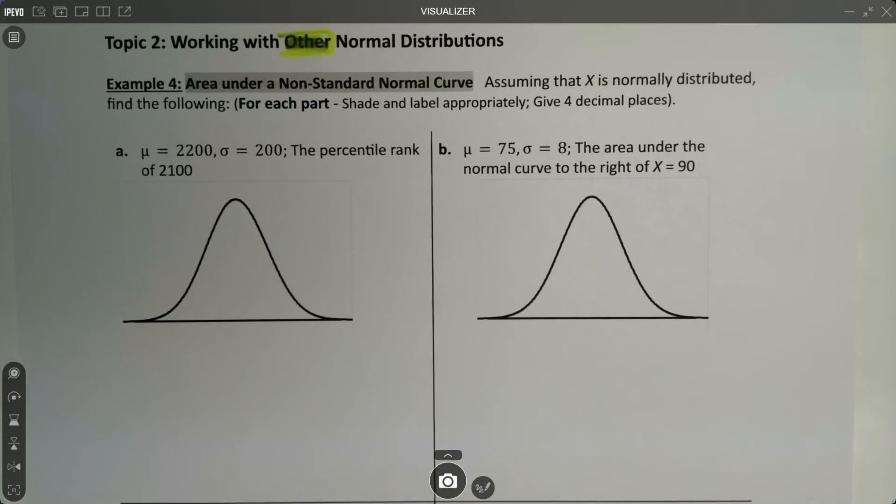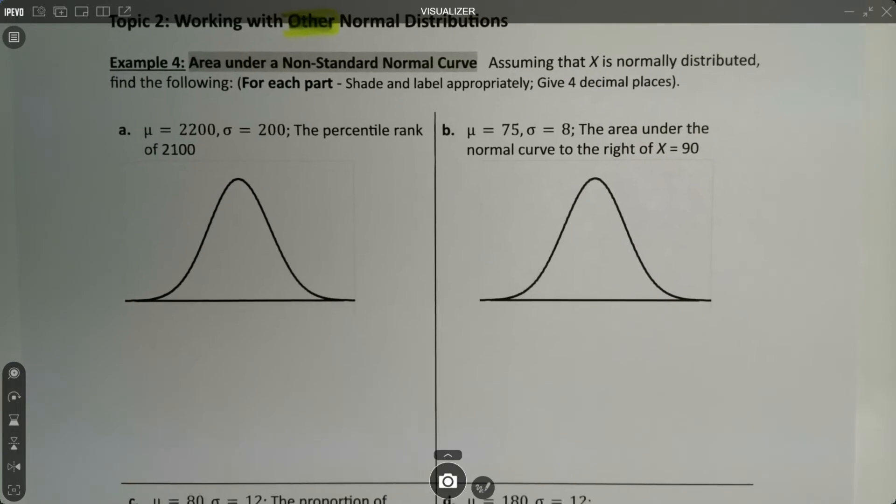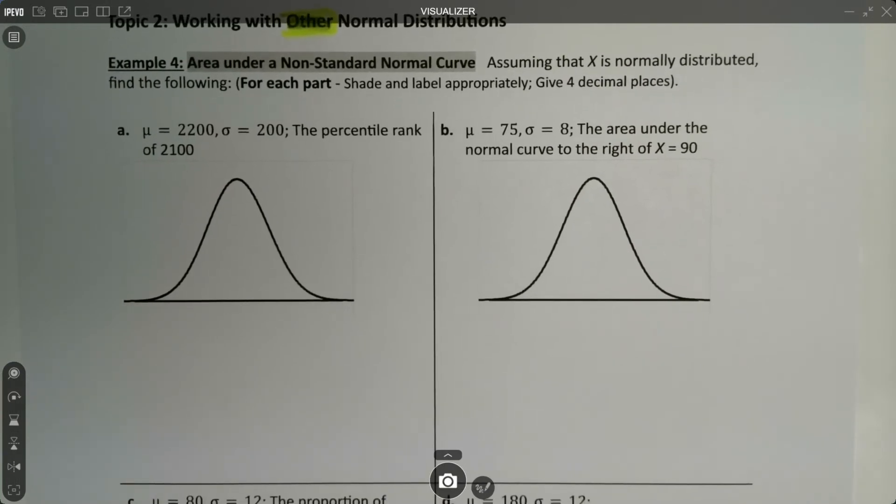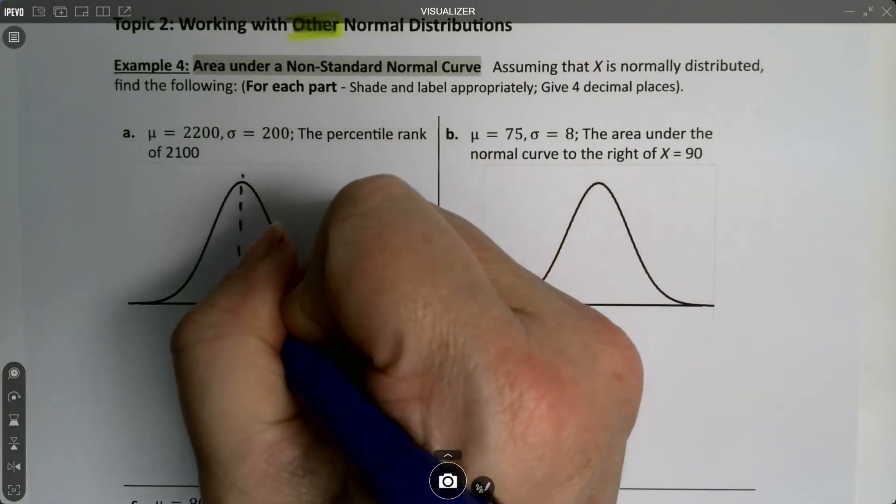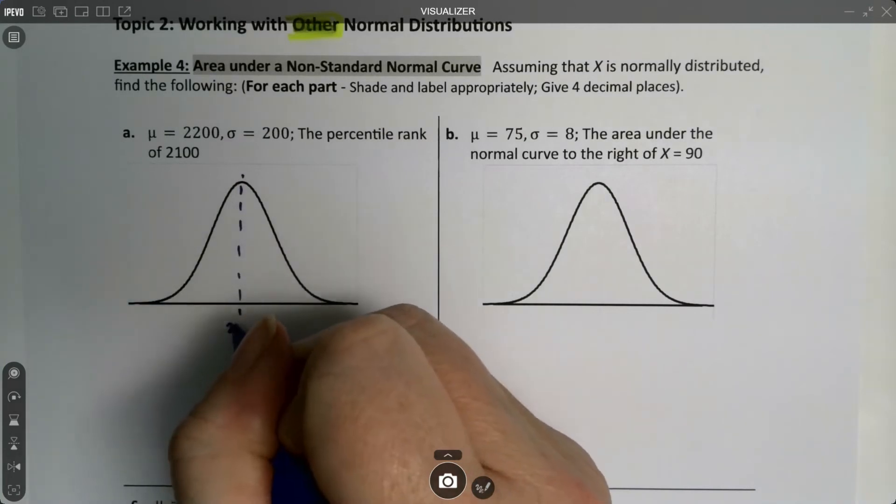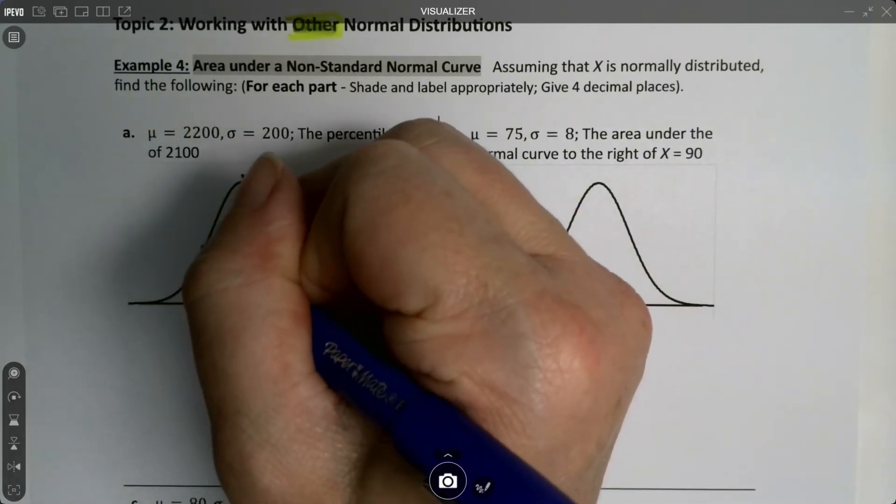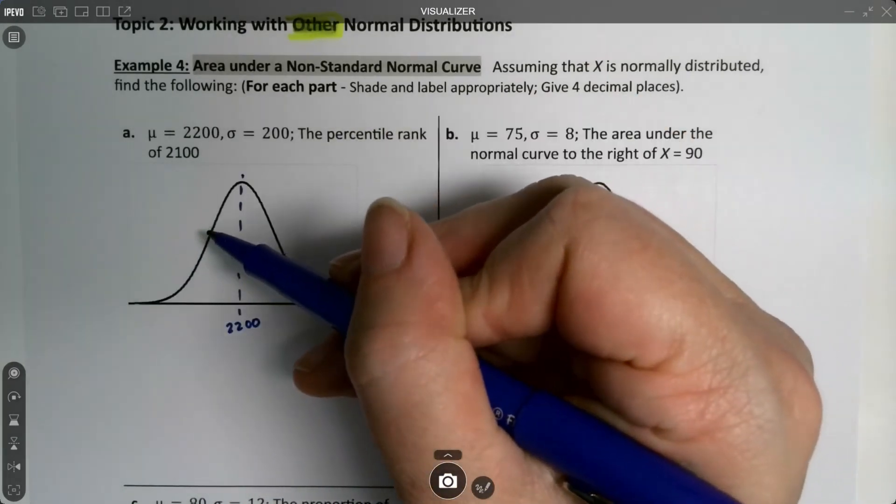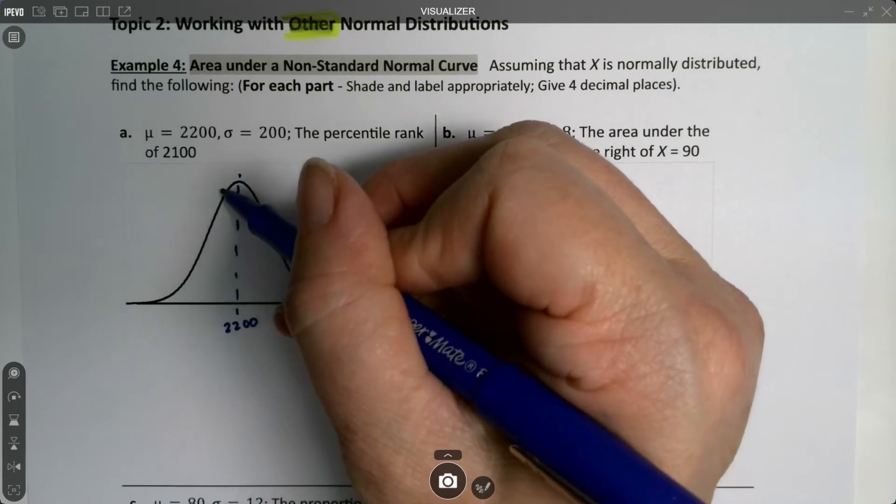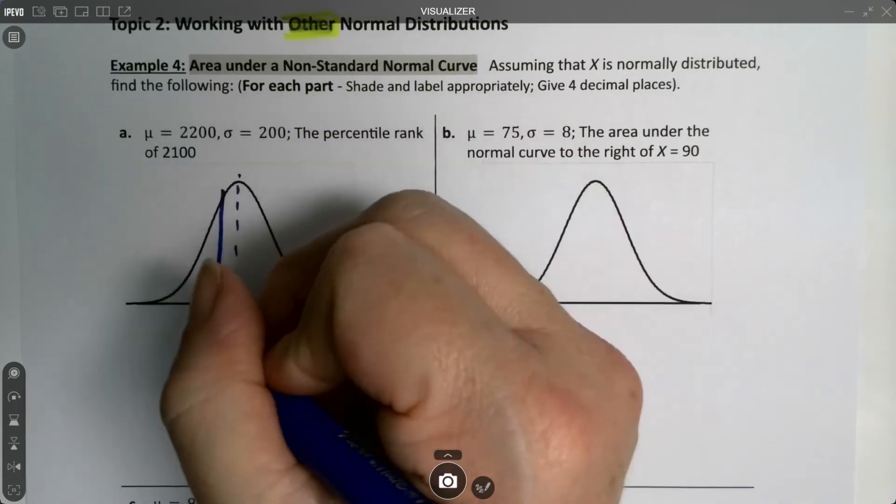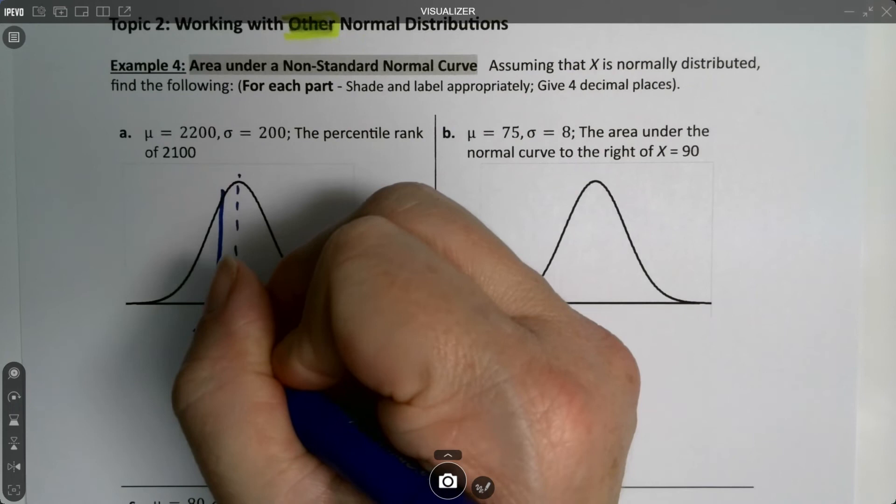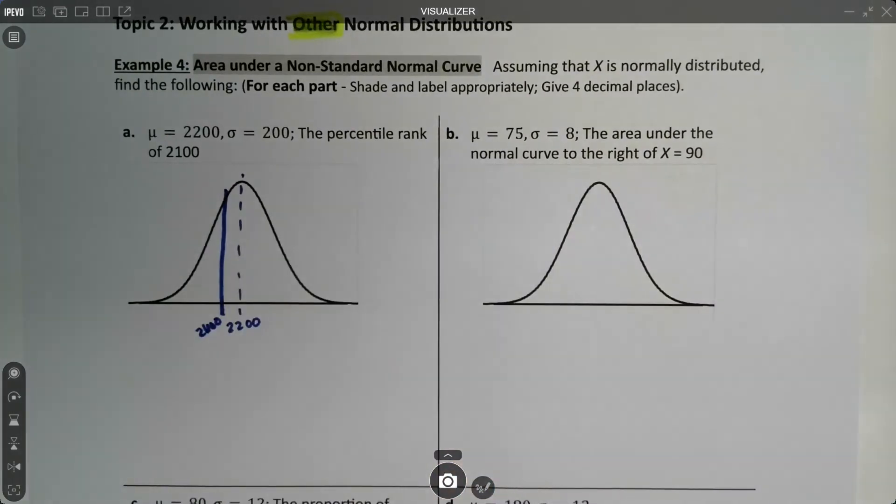We're going to assume that x is normally distributed and find the following. So the mean is 2200, the standard deviation is 200, and we want the percentile rank of 2100. So 2200 is here. The standard deviation, which is the inflection point, is at 200 away. So 2100 is right about there. You just have to be able to kind of eyeball where things are. That's the important piece.